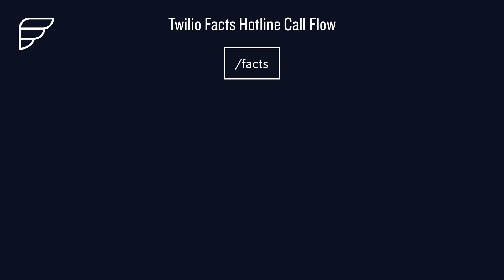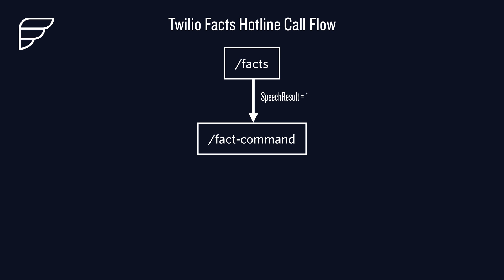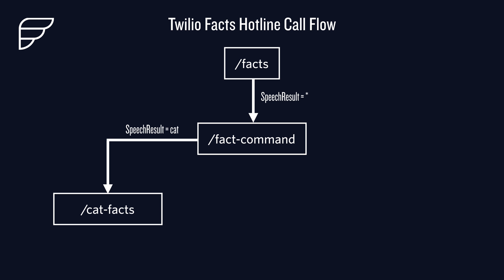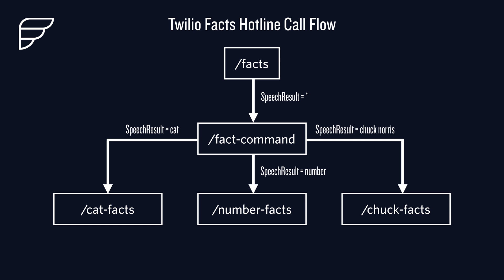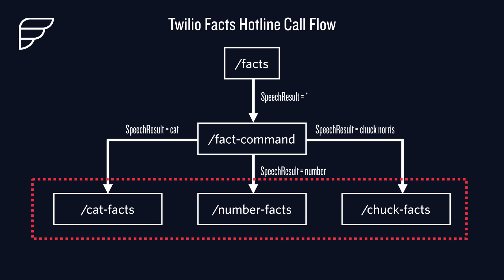We'll build our call flow inside of Twilio Functions. We're going to start at slash facts — that's a menu that takes a speech result and passes it to slash fact-command. If they say cat, it goes to cat facts. If they say number, it goes to slash number facts. If they say Chuck Norris, it goes to slash Chuck facts. At any time, the user can say menu to go back to slash facts and start over.